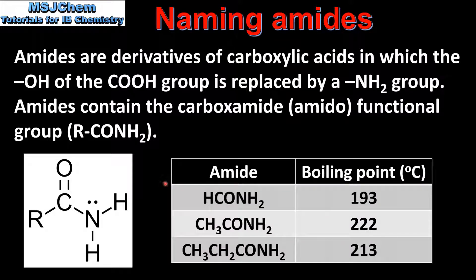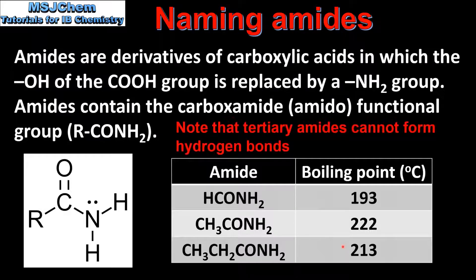In this table we have the boiling points of the first three primary amides. As we can see the boiling points are quite high. The reason for these high boiling points is that amides can form hydrogen bonds between their molecules. In addition to having high boiling points they are also soluble in water, and this is because they can form hydrogen bonds with water molecules.